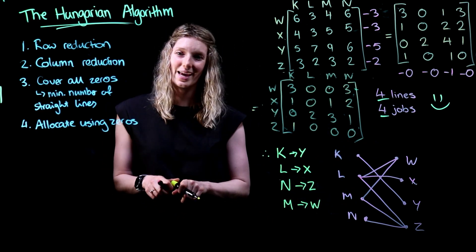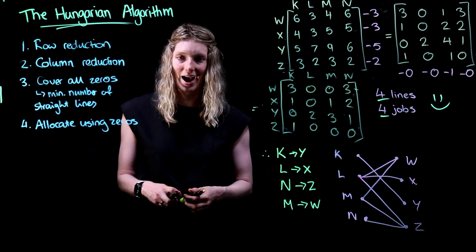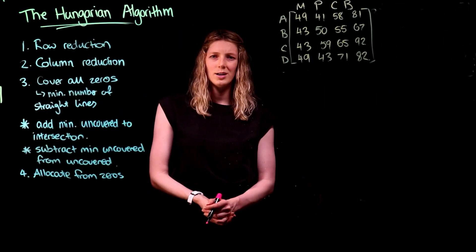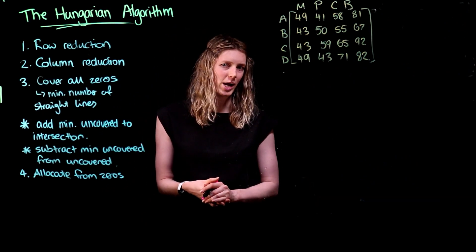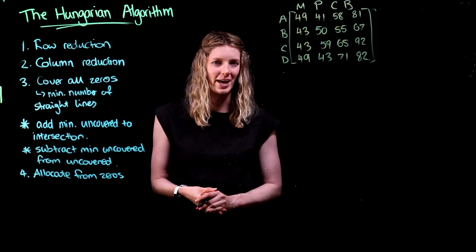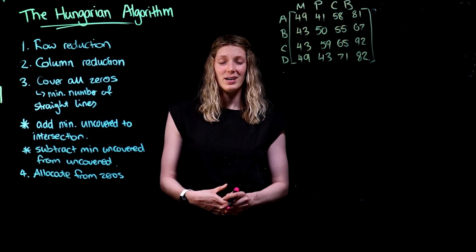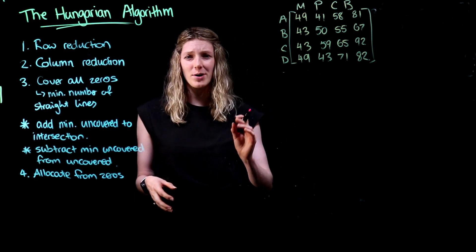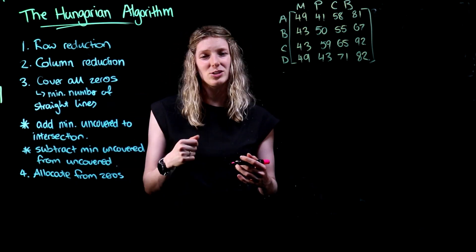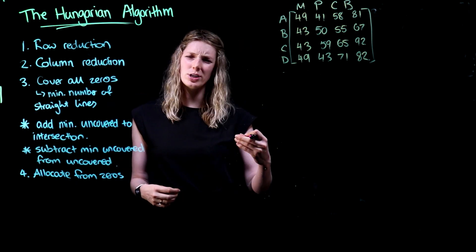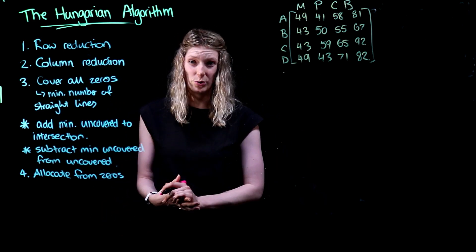And that is how we complete our allocation problems using the Hungarian algorithm. Chances are you've attempted a few Hungarian algorithm based questions — some have probably worked out nicely like that example we just covered. There's also a chance that you've come across a few whereby the number of lines you use to cover your zeros don't match the number of jobs you have.